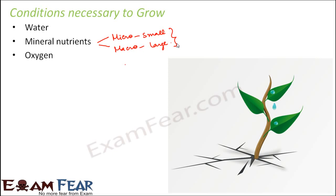Oxygen is required because it plays a very important role in photosynthesis and respiration. Temperature is also critical — each plant needs a specific temperature to grow. For example, plants from cold hilly areas like pines or deodar do not grow well in hot lowland areas. Some plants grow well in higher temperatures while others grow well in lower temperatures.